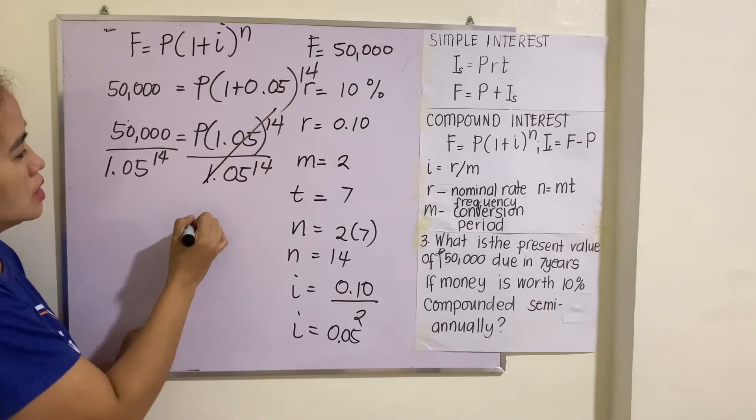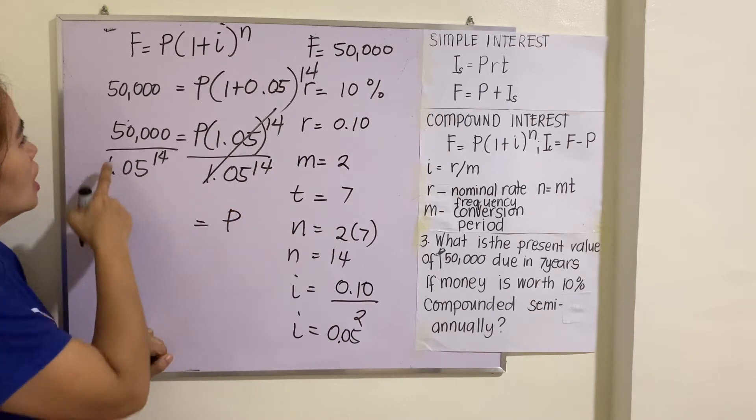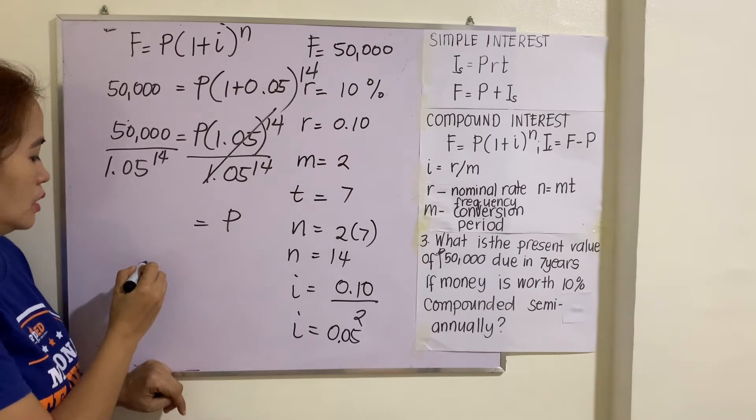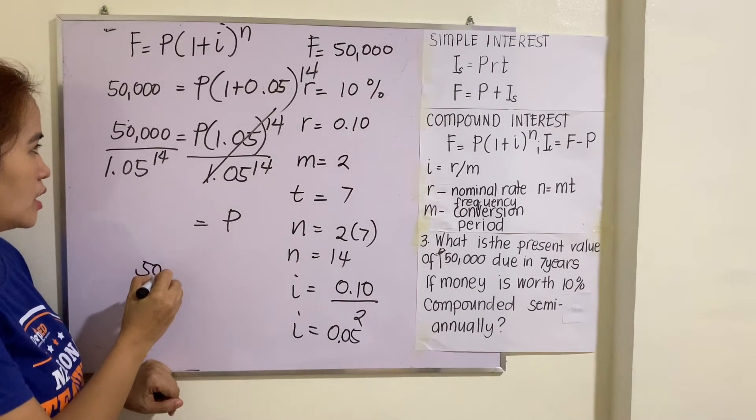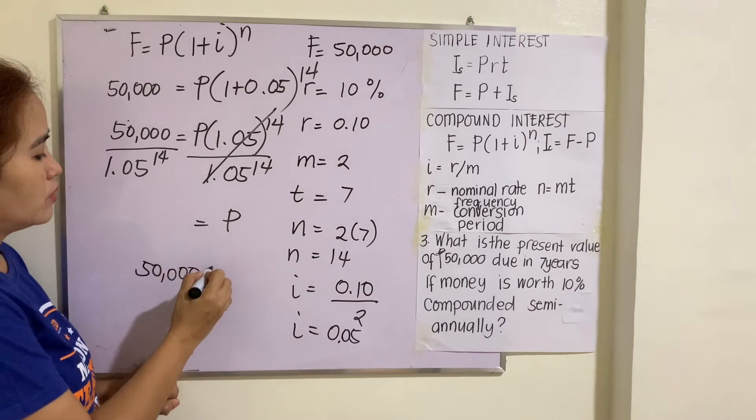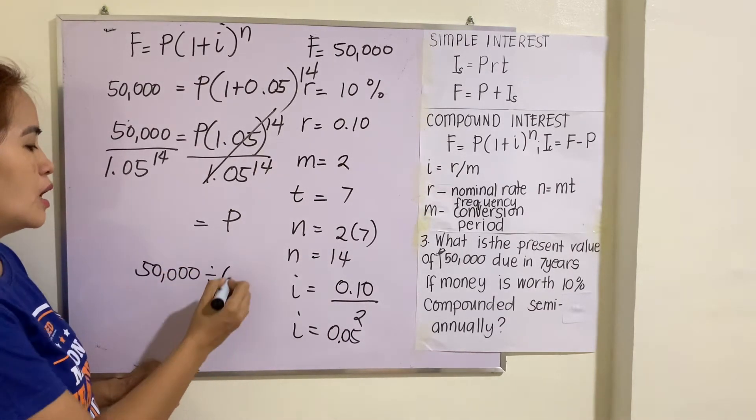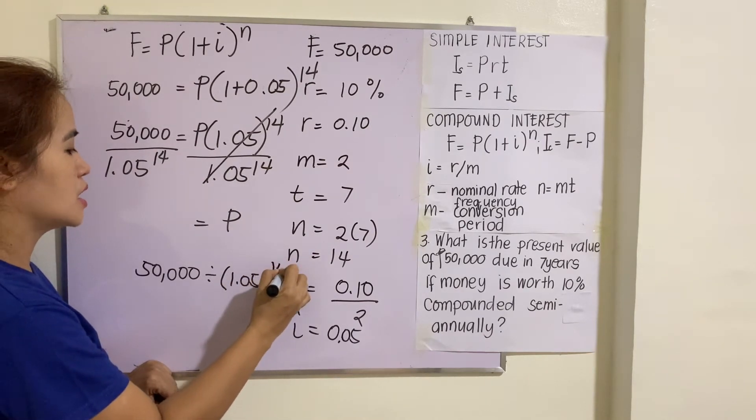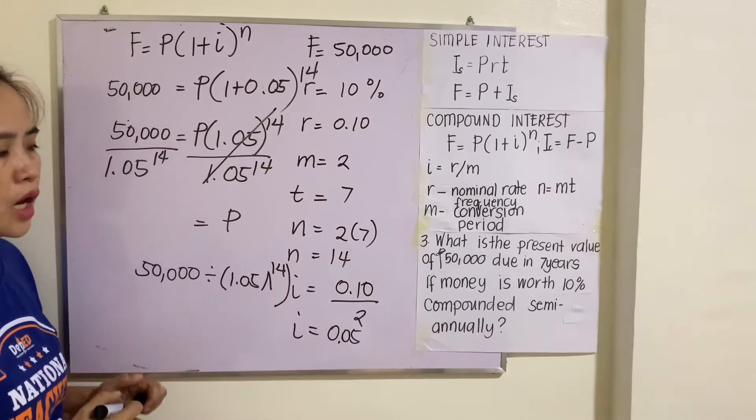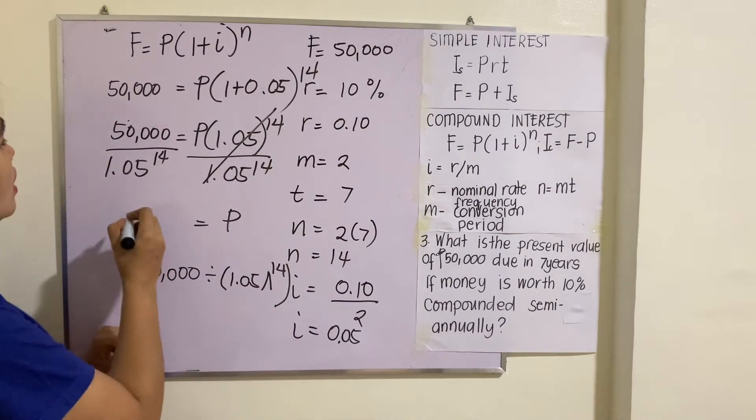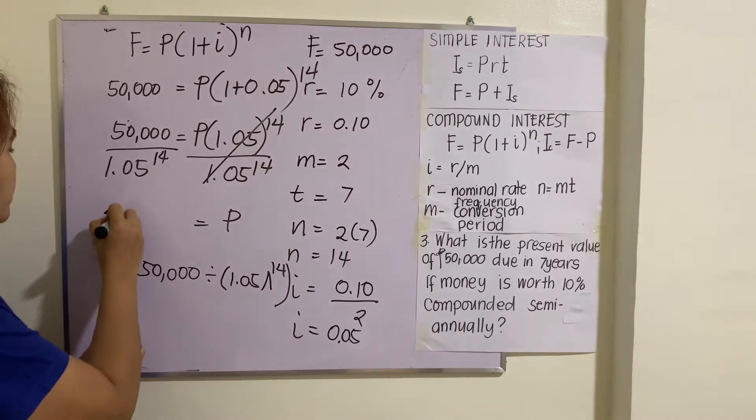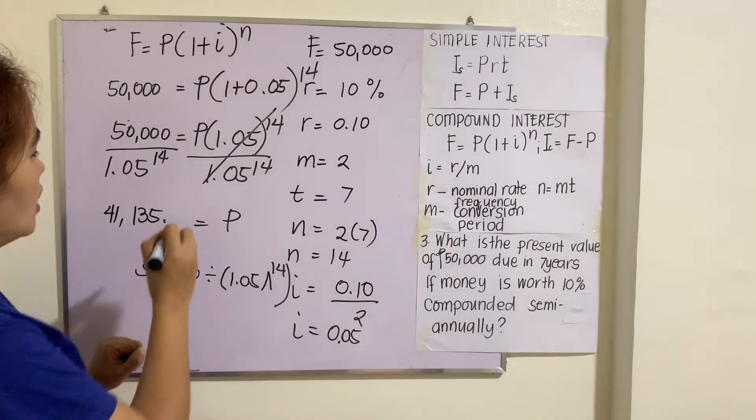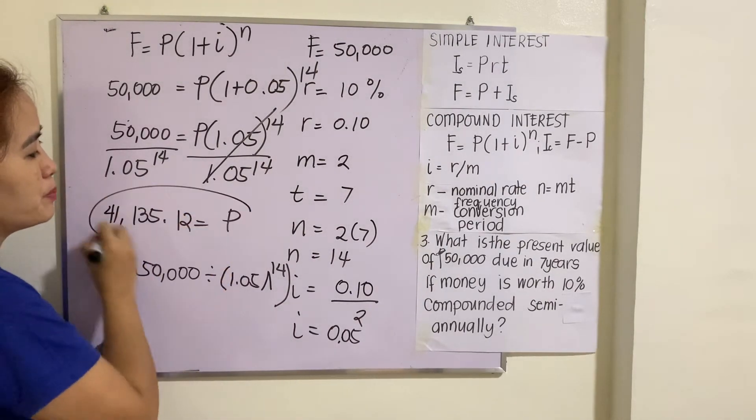This will be cancelled, so P = 50,000/(1.05)^14. Using scientific calculator, this is 50,000 divided by 1.05 raised to 14. And you will be getting there $41,135.12. That's the present value.